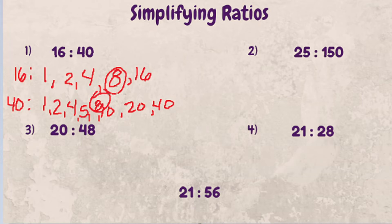So if we were to divide 16 by 8, we get 2. And if we divide 40 by 8, we get 5. 2 to 5 is a simplified ratio of 16 to 40.